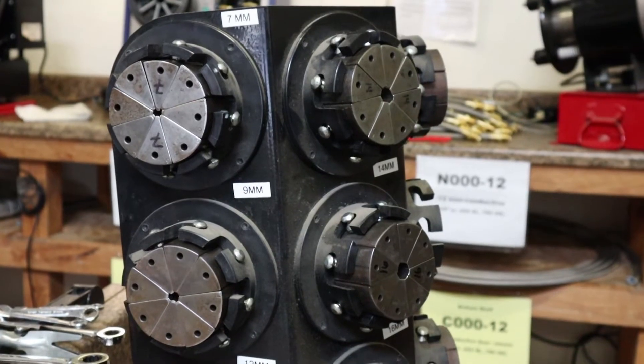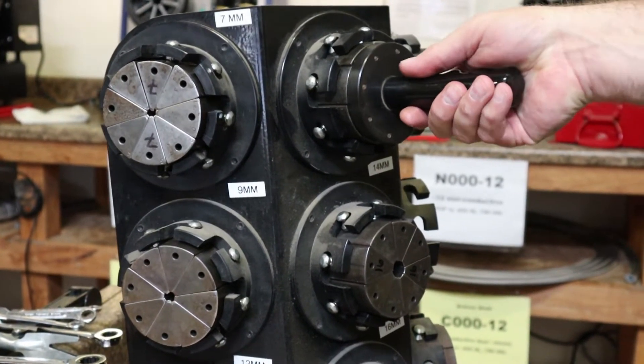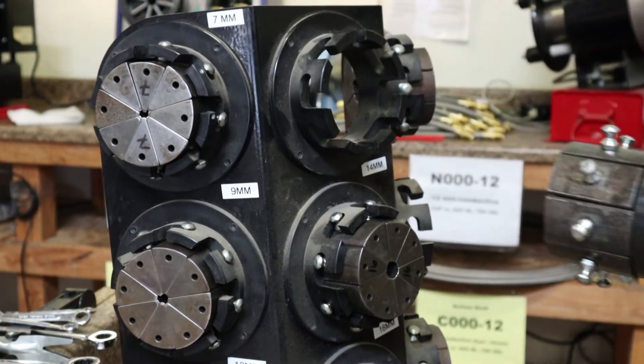Step 2. Set up the crimp machine with the required die and micrometer settings that were detailed in the previous step.